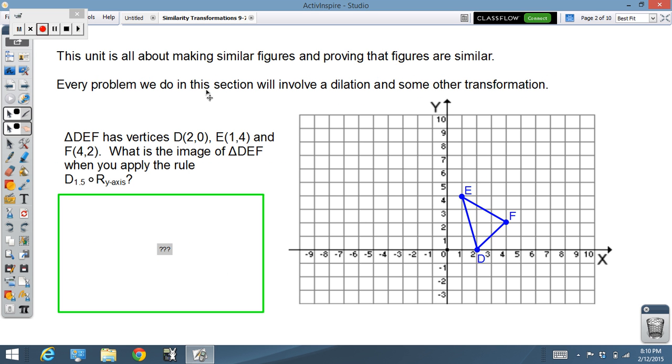So here's how it works. We're all about making similar figures and proving that figures are similar. So every problem we do in this section will involve some sort of dilation and usually something else as well. So here's the problem. We've got triangle DEF and it's got the vertices shown. What would come out of the image of triangle DEF when we apply this rule? Dilation of 1.5 after a reflection across the y-axis.